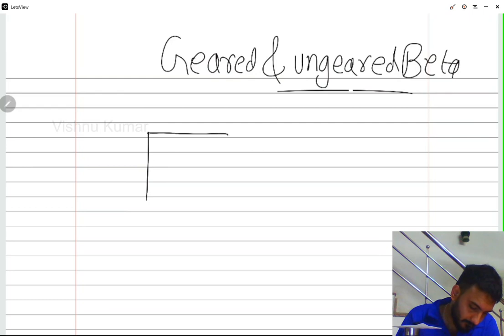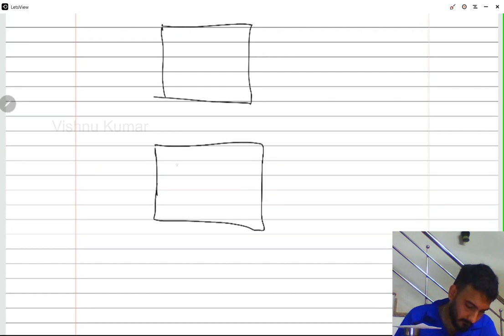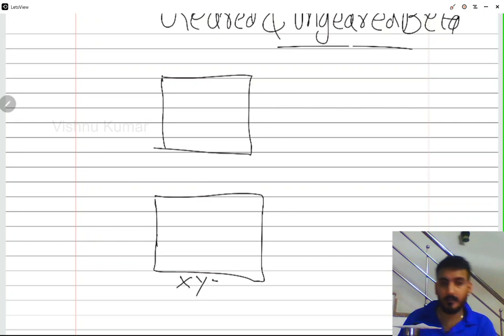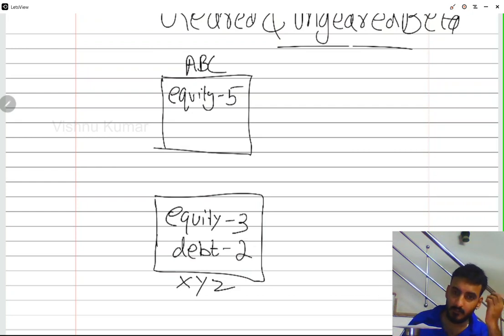Suppose there are two entities. The name of these entities are X, Y, Z and A, B, C. The same amount of sales are almost the same, except one thing. In ABC, there is no element of debt. We call it unlevered firm.